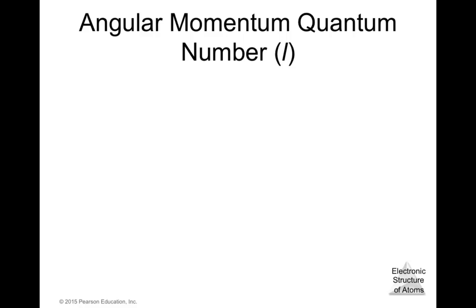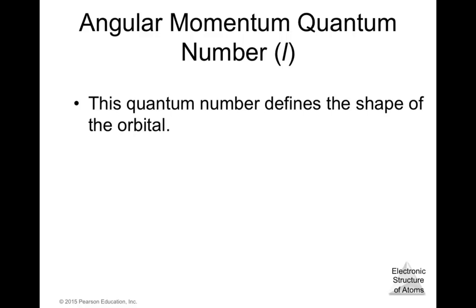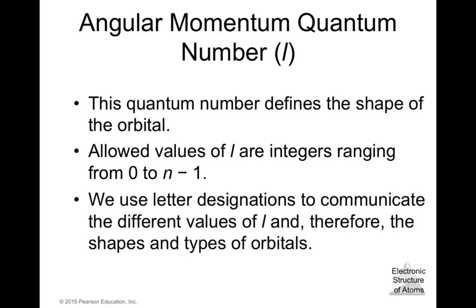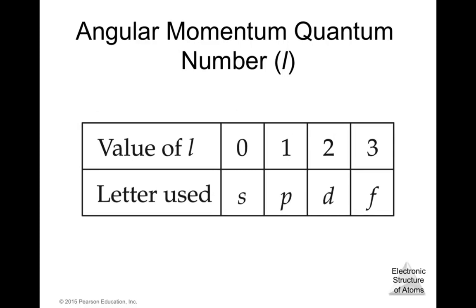The second quantum number is the angular momentum quantum number l, which defines the shape of the orbital. Allowed values of l are integers from 0 to n−1. We use letter designations to communicate the different values of l: l = 0 is s, l = 1 is p, l = 2 is d, l = 3 is f, and l = 4 is g.